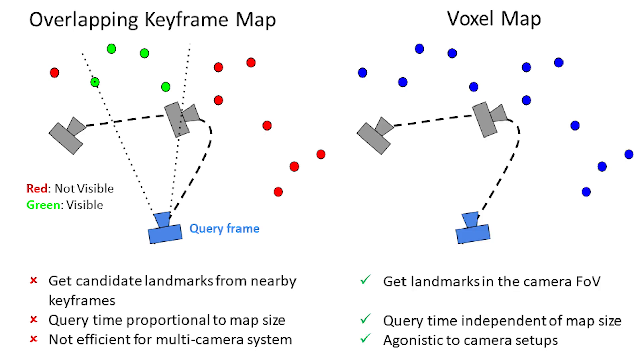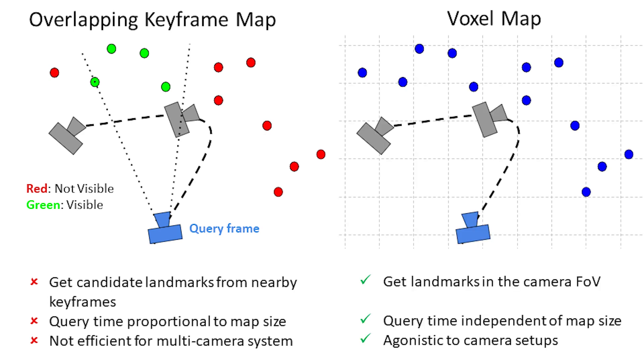Our approach represents the scene as voxels. We propose a raycasting-based map query that guarantees the query points to be in the field of view of the camera. Using efficient voxel hashing allows constant query time regardless of the map size. Our proposed voxel map representation is scalable and geometry-aware.